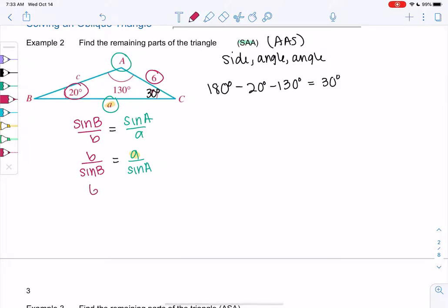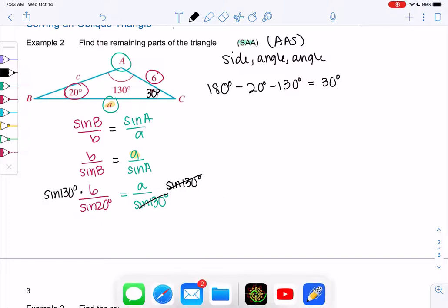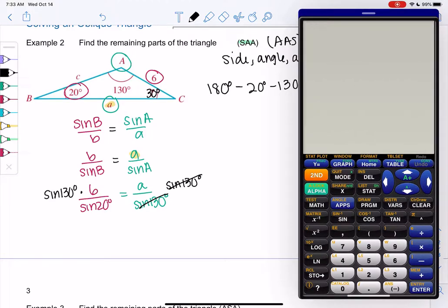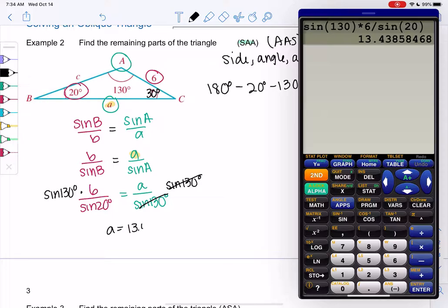Alright, so B is 6 over sine of 20 equals A is unknown over sine of 130. We just multiply both sides by sine of 130. So sine of 130 times 6 all over sine of 20, and we get A is about 13.44.